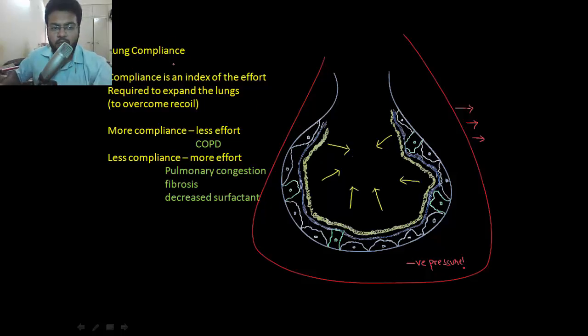Next is lung compliance. What is lung compliance? It is the index of effort required to expand the lung. The normal tendency of the alveoli is to collapse. The elastic recoil is inside.